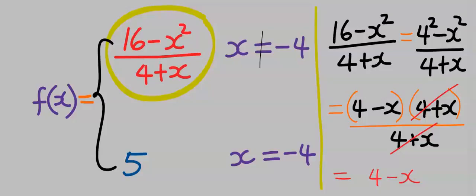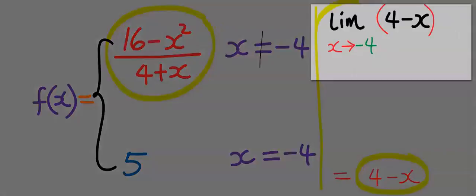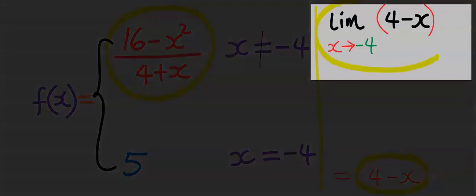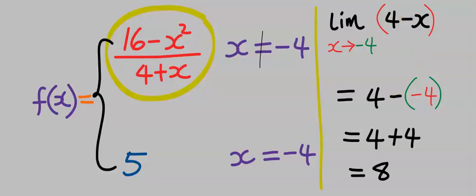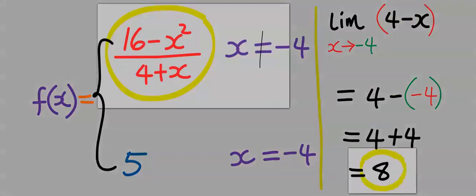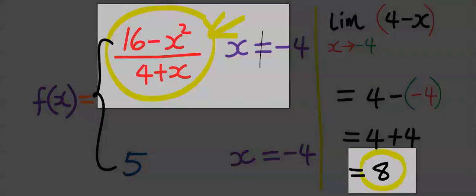Next, we are going to take the limit of this function as x tends to minus 4. We take the limit of this function by substituting x for minus 4. Beware of this negative. And we have 8 for the left-hand limit.